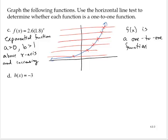Exercise D. H of x is negative 3. This is a horizontal line, and we can get a rough sketch of it. H of x is negative 3. Looks like that.